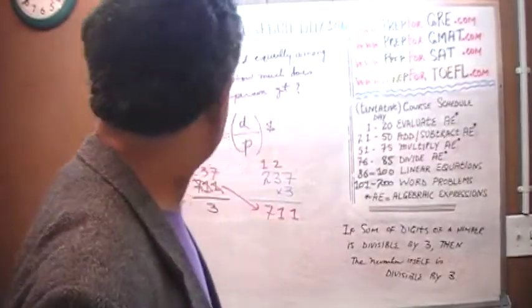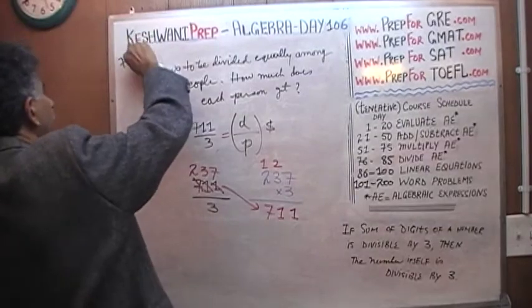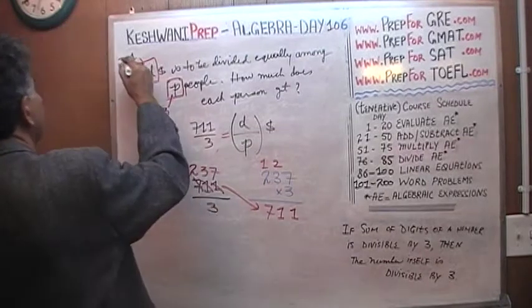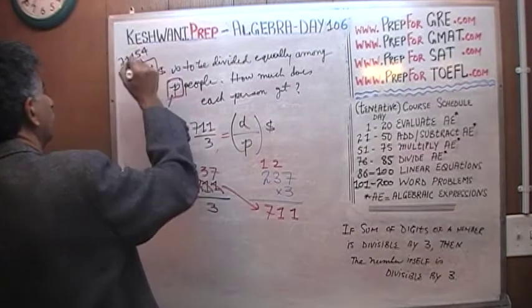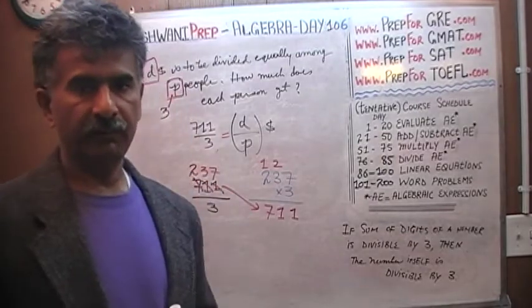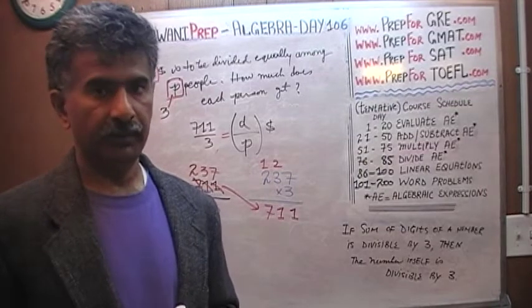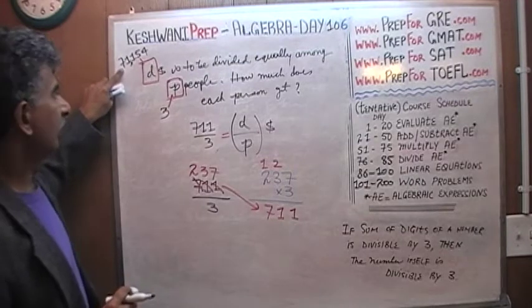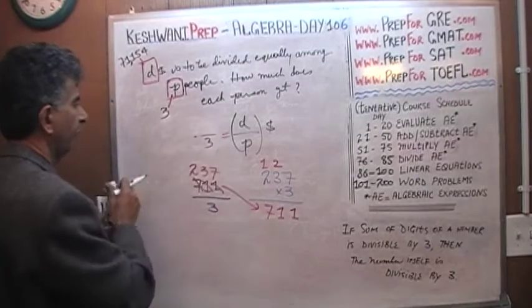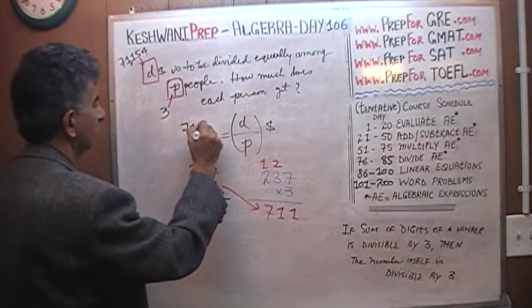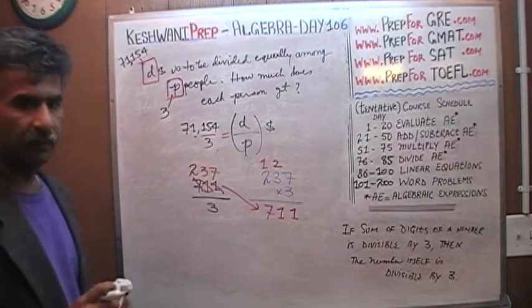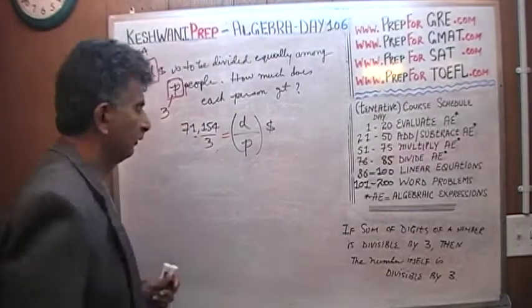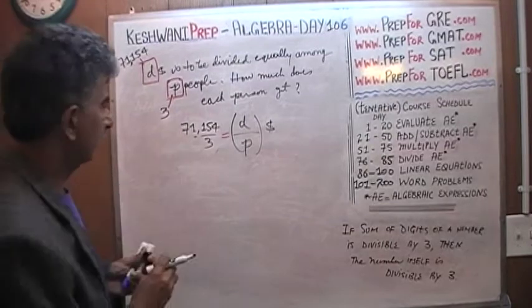What would have happened if instead of 711 we were told that 71,154 dollars is to be divided among 3 people. Can we divide that? Just out of curiosity. Well, if 71,154 dollars is to be divided among 3 people, then we would have here 71,154. The very first thing we need to figure out is: is this number—if you are done with 711, I am going to erase it.